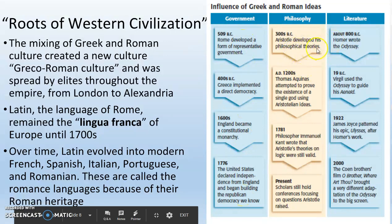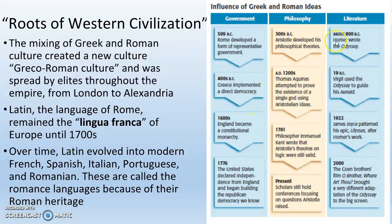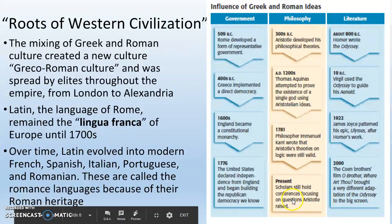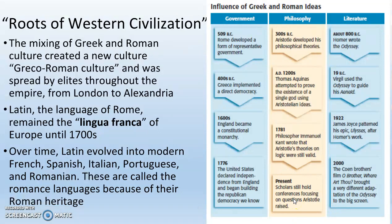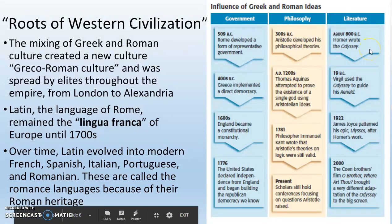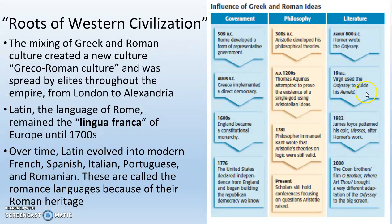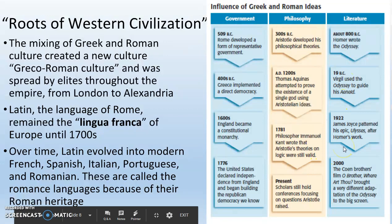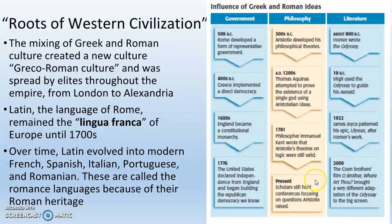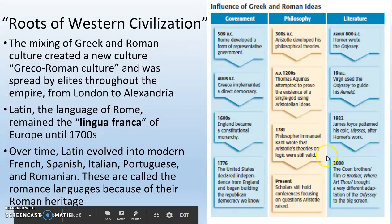In philosophy, Aristotle developed his theories in Greece in the 300s BCE. In the 1200s, Thomas Aquinas, a European theologian, wove some of Aristotle's ideas into Christian religion. In 1781, philosopher Immanuel Kant wrote that Aristotle's theories on logic were still valid and applied them to the modern world. Scholars still read Aristotle today. In literature, Homer wrote the Odyssey in 800 BCE; in 19 BCE, Virgil used it as a guide to write his Aeneid. In 1922, James Joyce patterned his epic Ulysses after Homer's work, and in 2000 the film O Brother Where Art Thou was largely based on the Odyssey.